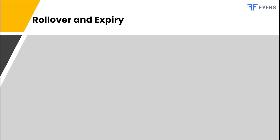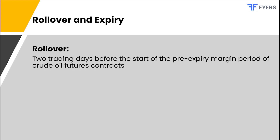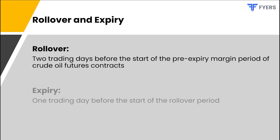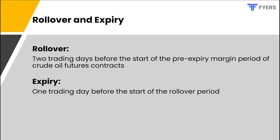The rollover and expiry of the energy index futures contract is based on the near-month crude oil futures contract. The rollover of the energy index lasts two trading days before the start of the pre-expiry margin period of crude oil futures, while the energy index expires one trading day before the start of the rollover period.